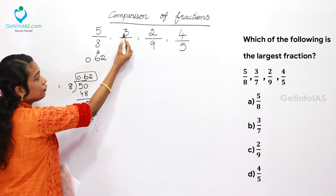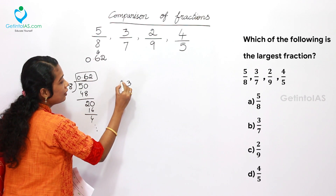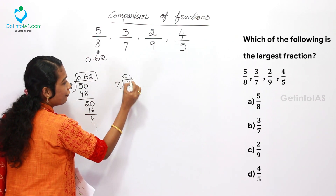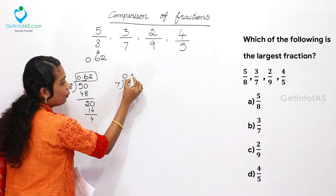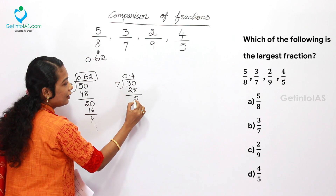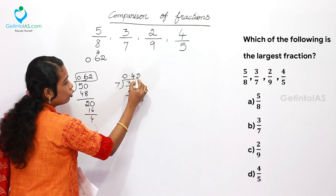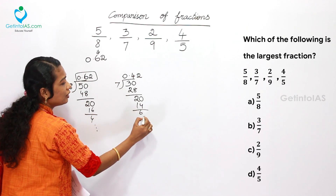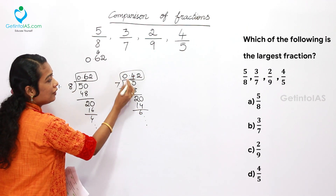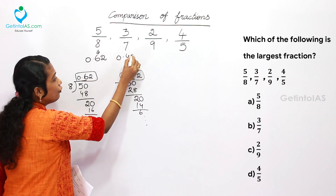Next, 3/7: divide 3 by 7. 0 times, and after including 0, 4 times 7 is 28. Then 20 divided by 7 gives 2 times 7 is 14, and it continues. We only require 2 digits after the decimal, so 3/7 is 0.42.